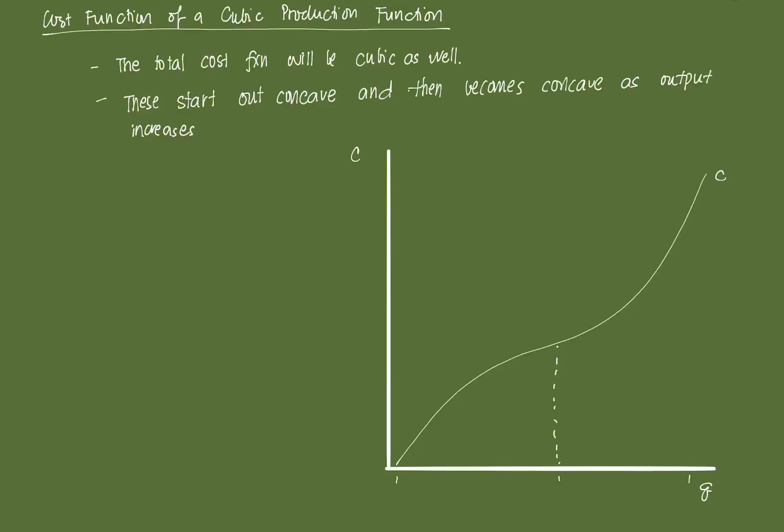So you can think of a cubic production as some sort of representation of variable returns to scale. So from this point to here, you may have increasing returns to scale. At here, when the slope of this is already zero, this may be constant returns to scale.